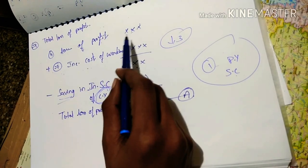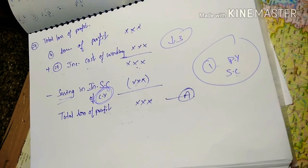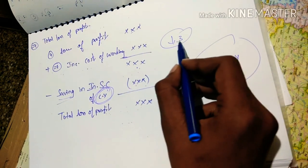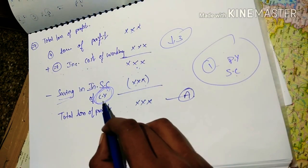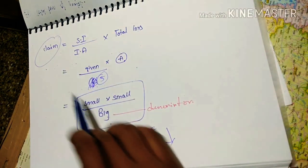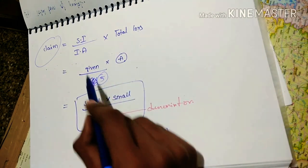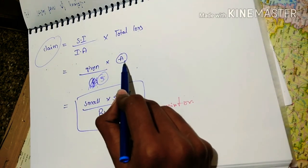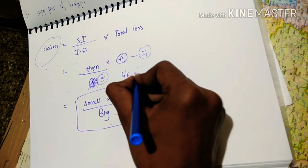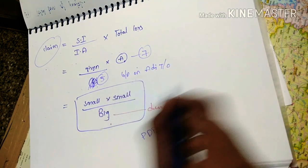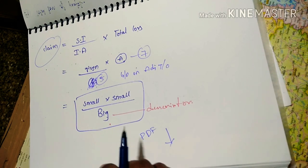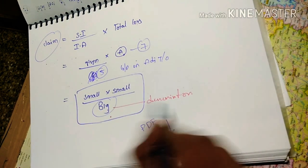Step seven: total loss of profit. Add the loss of profit from step three and the increase in cost of working from step six, then deduct savings in insured standing charges of the current year to get the total loss of profit. The net claim is calculated as: sum insured divided by the insurable amount (step five), multiplied by the total loss of profit from step seven. Sum insured is given in the question. Remember: small over big — if there is an average clause, the bigger value always goes in the denominator, so you can calculate the net claim easily.